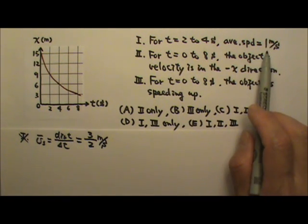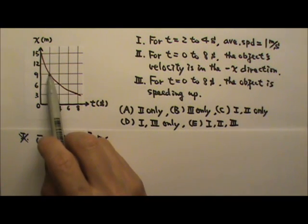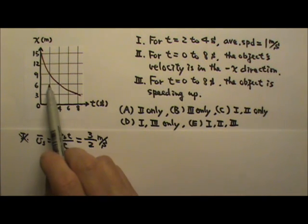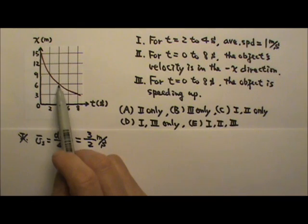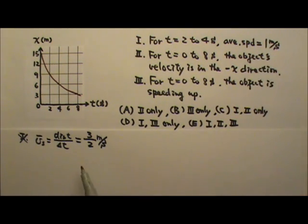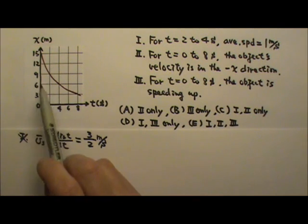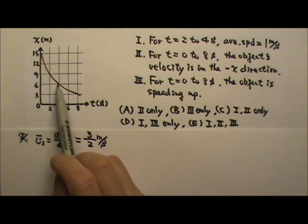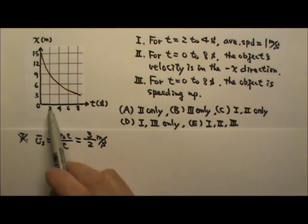The question gives you 1 meter per second because some people would say the displacement is 1 block and the time is also 1 block. Therefore, 1 block divided by 1 block and you get 1 meter per second. But that's not, of course, how you do it because we do not look at the number of blocks. We look at the labels to see what the delta x is, what the delta t is, not the number of blocks.